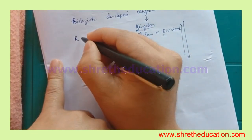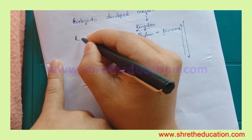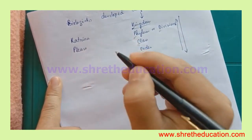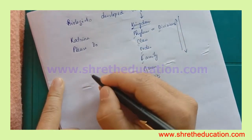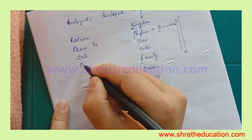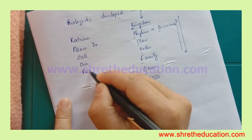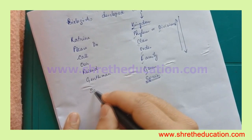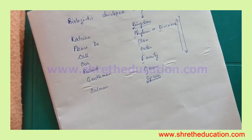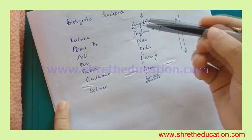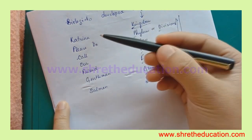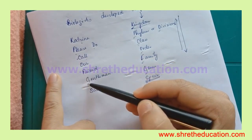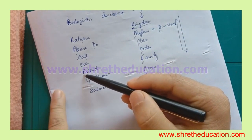To remember the taxonomic hierarchy, here is a mnemonic sentence: 'Katrina, please do call our friend, gentleman Salman.' K is kingdom, P is phylum, D is division, C is class, O is order, F is family, G is genus, and S is species. This sentence helps you remember the sequence: kingdom, phylum, division, class, order, family, genus, species.